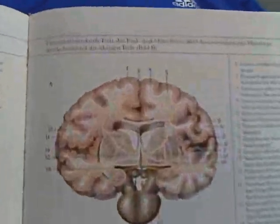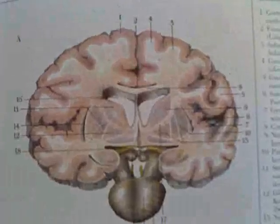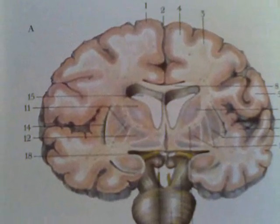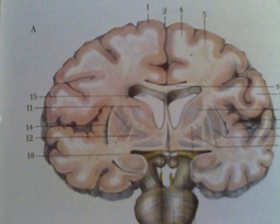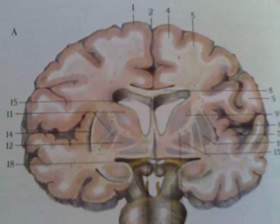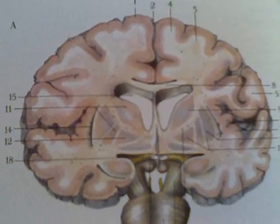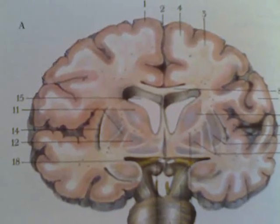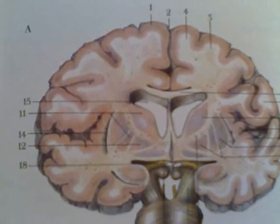I'll bring that up nice and close so you can see it clearly. Number one is the cerebral cortex. Number two is the longitudinal fissure of the brain. Number three is the substantia alba, or the white substance of the brain.